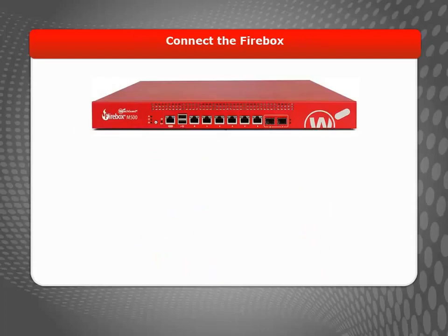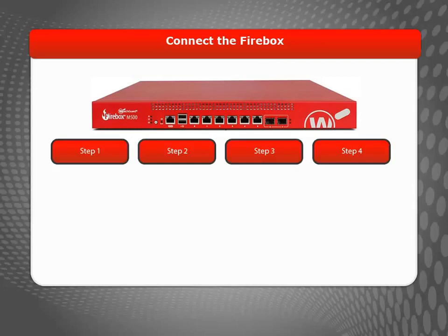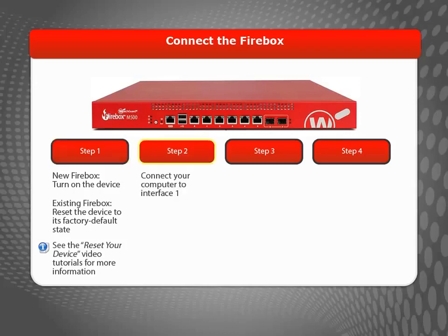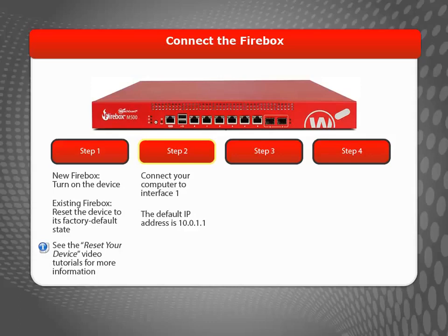Now that you have all your network information, you are ready to connect your computer to the Firebox and start the Web Setup Wizard. If this is a new device, you can just power it on and the device will be ready for you to start the Wizard. If this is not a new device, you must reset it to its factory default state first. Next, use a network cable to connect your computer to Interface 1 on the Firebox. The factory default IP address for Interface 1 is 10.0.1.1, so your computer also needs to have an IP address on that network. If your computer is set up to get an IP address from DHCP, the Firebox will automatically assign your computer an IP address when you connect to Interface 1. Otherwise, you must manually configure your computer to use an IP address on the same subnet.